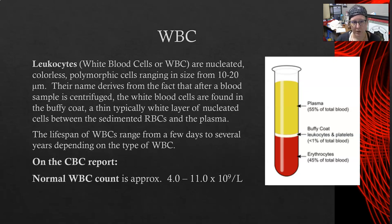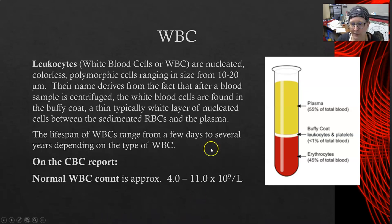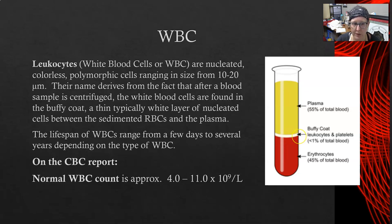They are nucleated, colorless, polymorphic cells that range in size from 10 to 20 microns. Their name derives from the fact that after the blood sample is centrifuged, the white blood cells are found in the buffy coat, which is a thin, typically white layer of nucleated cells between the red cells that have settled and the plasma. The higher the white count, the thicker this layer is.